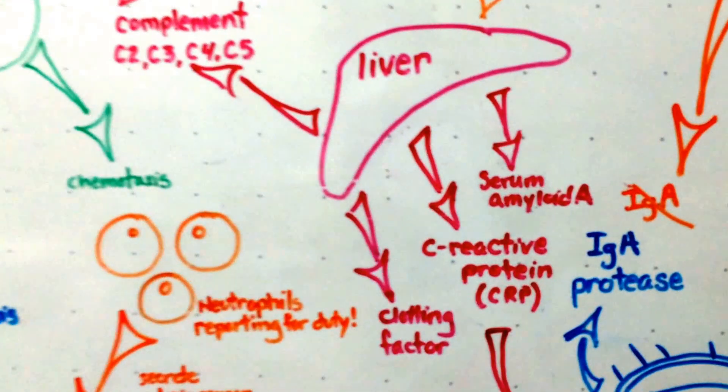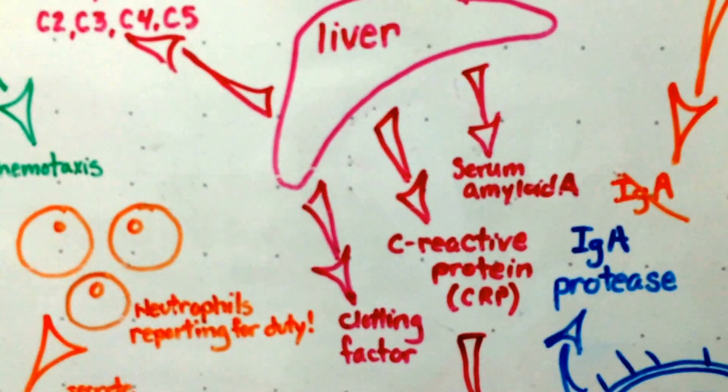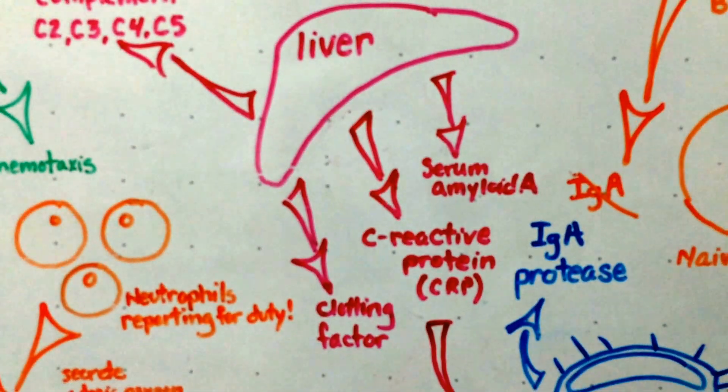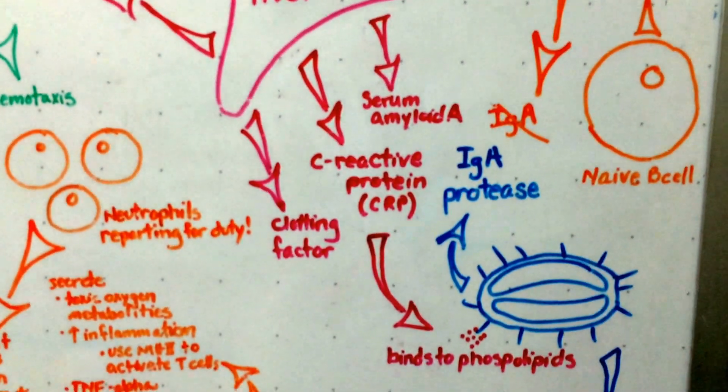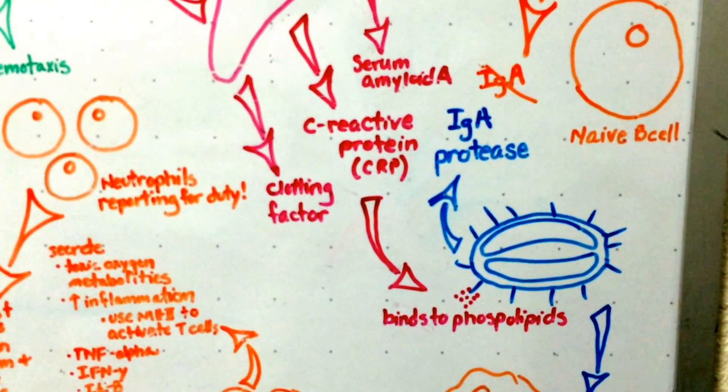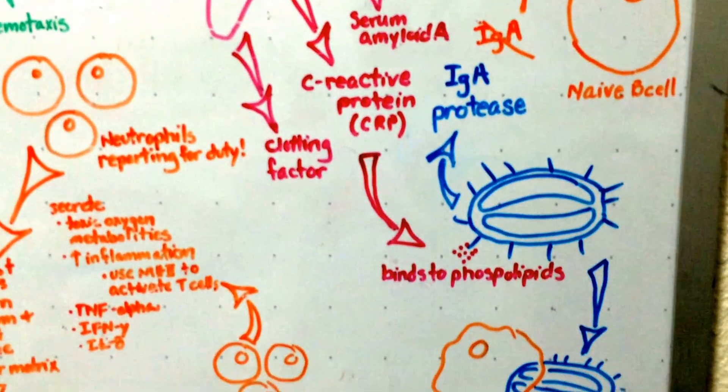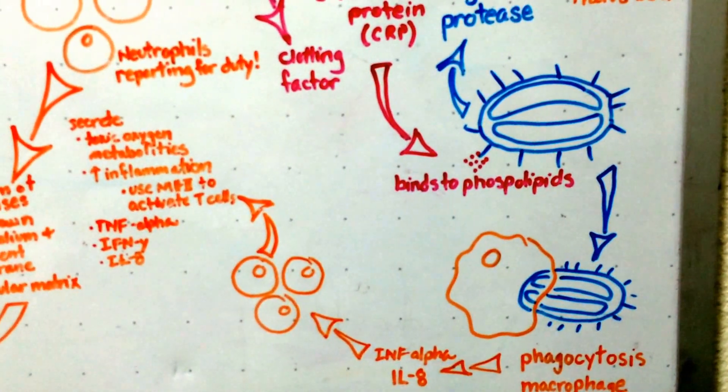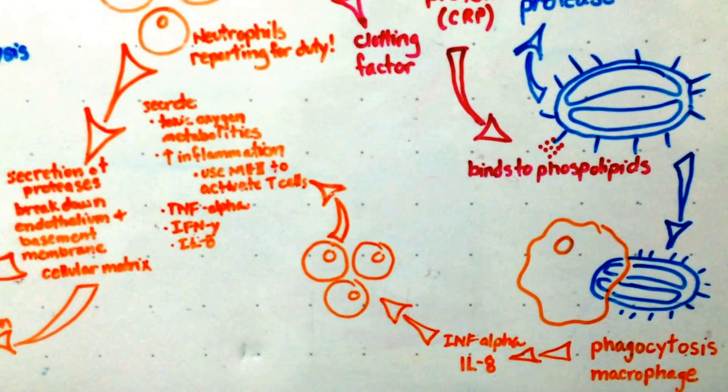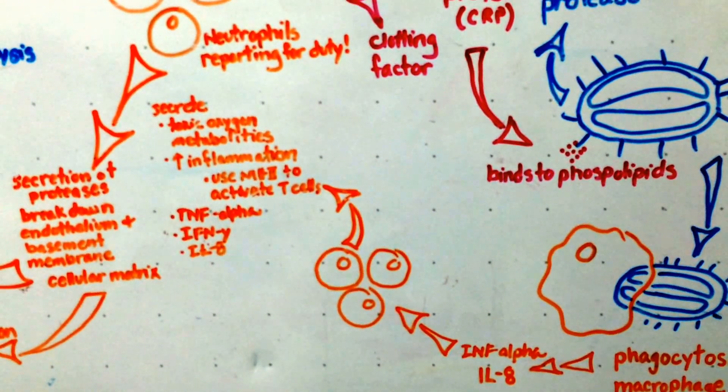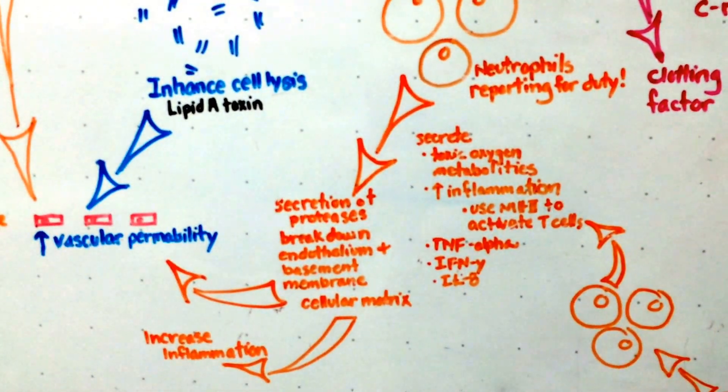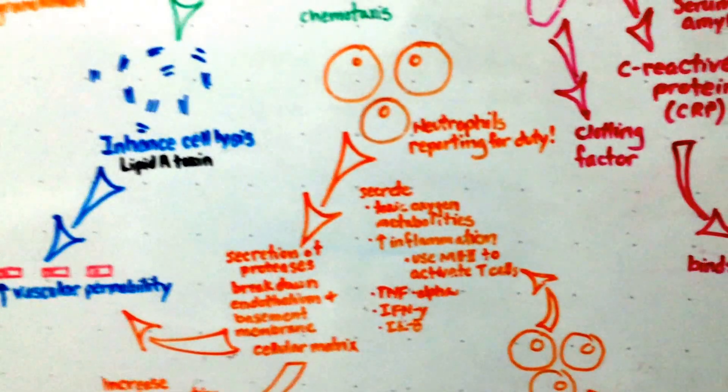The liver also releases clotting factors and C-reactive protein which binds to the bacterium phospholipids and that causes phagocytosis. And those macrophages are releasing TNF-alpha and interleukin-8 which is causing vascular permeability and increased inflammation.